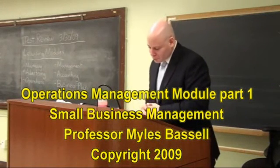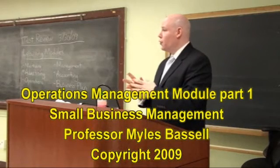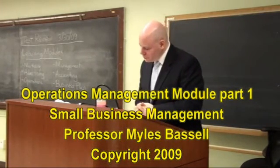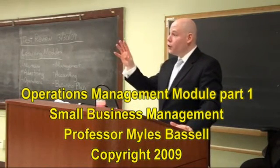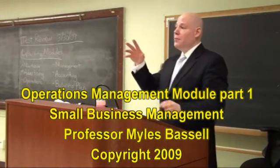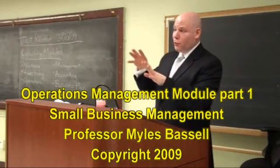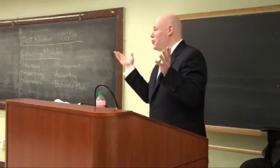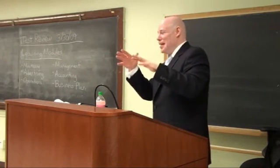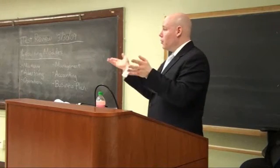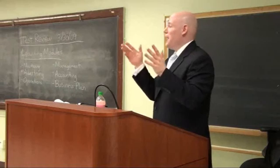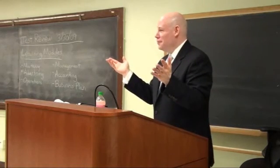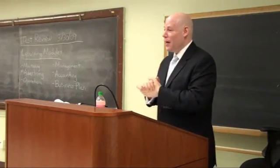We're going to talk about operations management. Here are the ten key decision areas for an operations manager. The first is the design of the product, and the product could either be a good or a service. There are two types of goods: a durable good and a non-durable good. The non-durable good is generally referred to as a consumable, such as food, beverages, shampoo, hand cream, or cocoa butter.